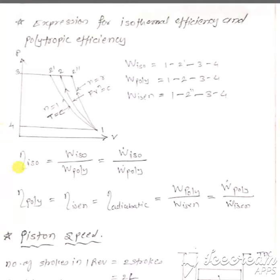Isothermal efficiency equals W isothermal upon W polytropic, or W dot isothermal upon W dot polytropic. Polytropic efficiency and isentropic efficiency, or adiabatic efficiency, will be W poly upon W isentropic, or power polytropic upon power isentropic.